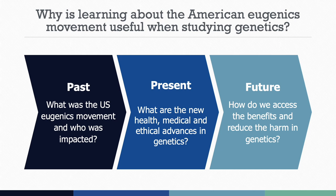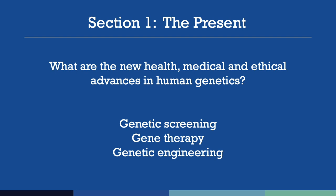This lesson is divided into three sections. It begins with an overview of the ways in which genetic technology is currently being used and its implications for health, medicine, and ethics. The lesson then traces the history of the American eugenics movement through historical events and documents. Finally, the lesson concludes by highlighting efforts to halt eugenic practices and looks ahead to emerging issues at the intersection of genetics, health, and informed consent.